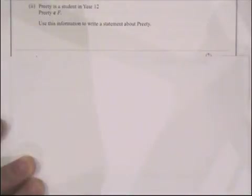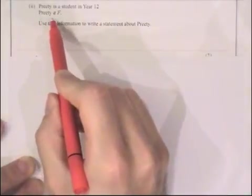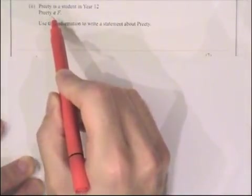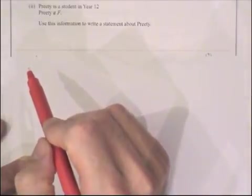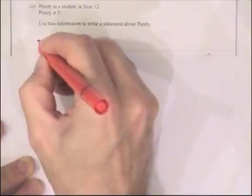The next part of the question tells us that Priti is a student in year 12. It also says that Priti is not a member of F. That symbol you must know, it's not a member of. If Priti is not a member of F, then that means that Priti does not study French.